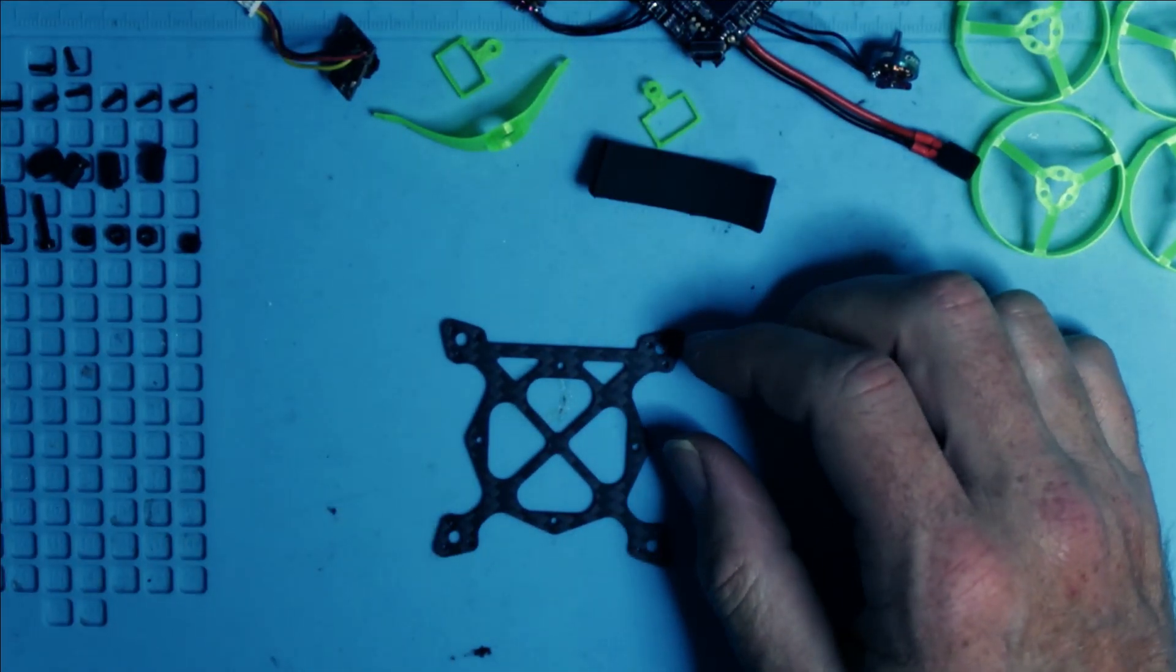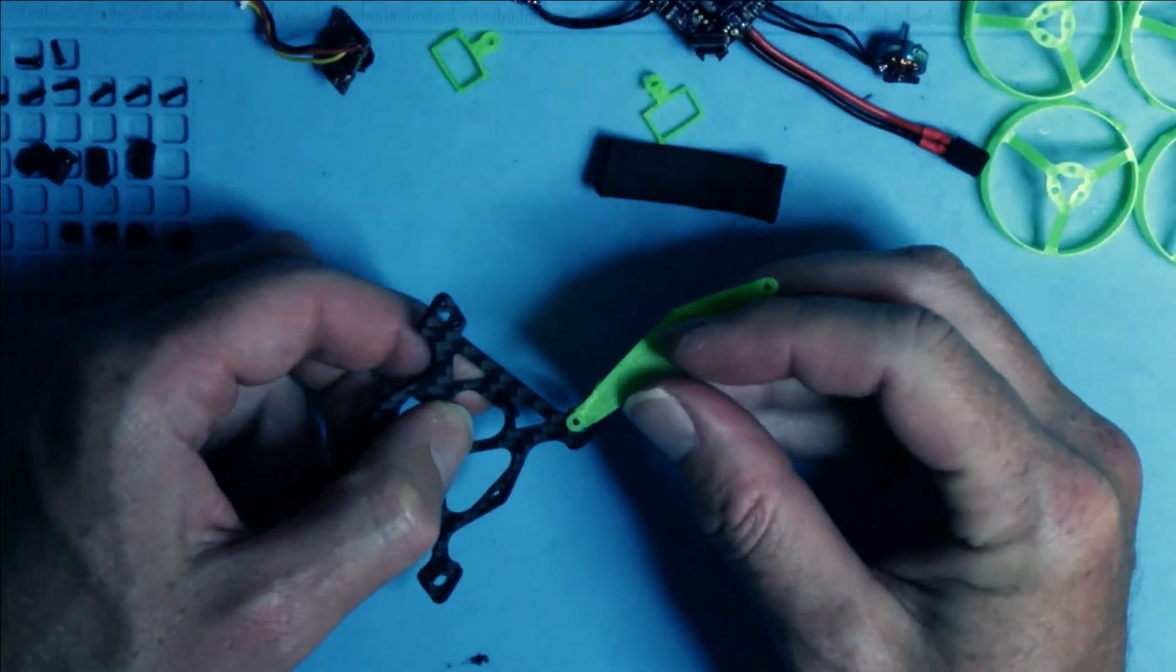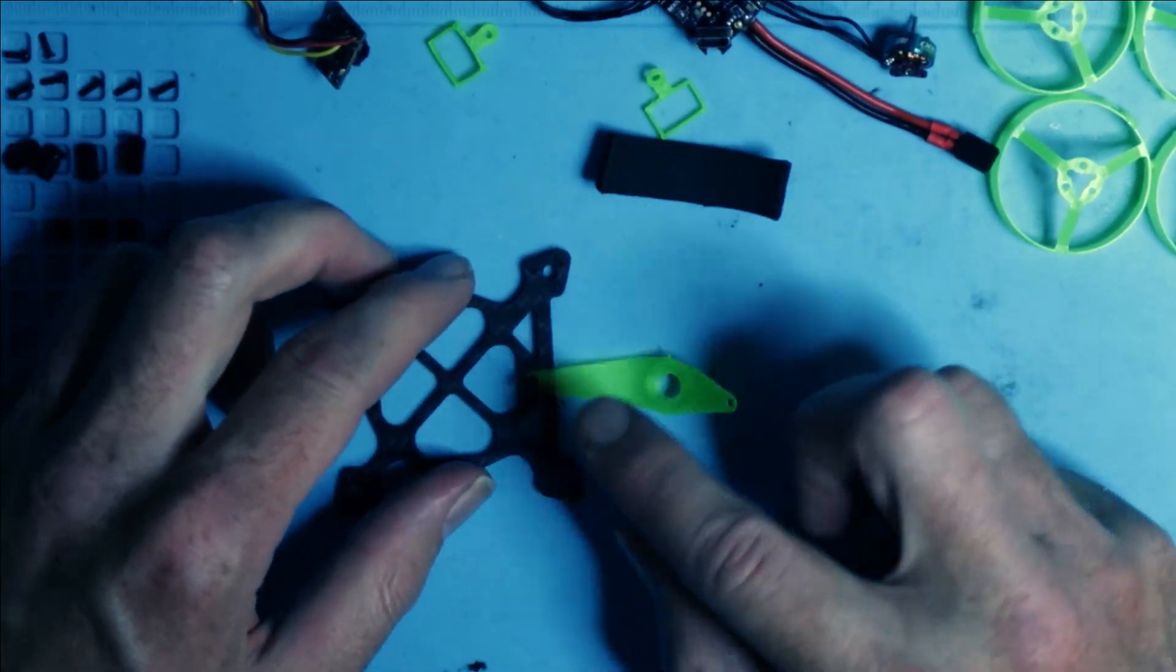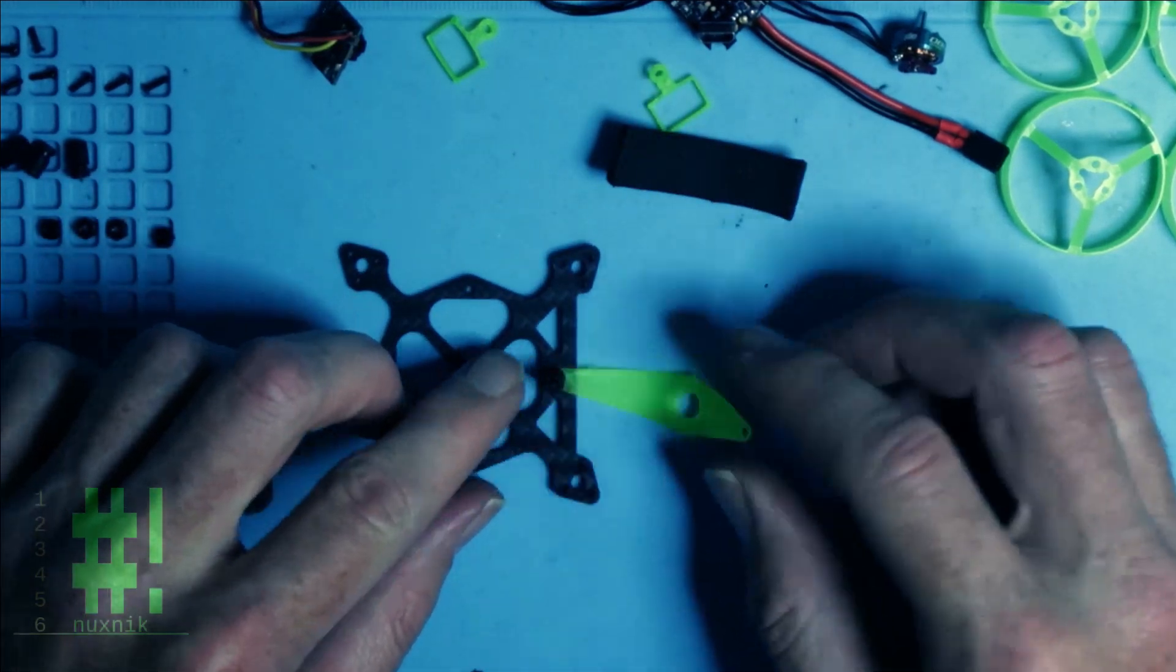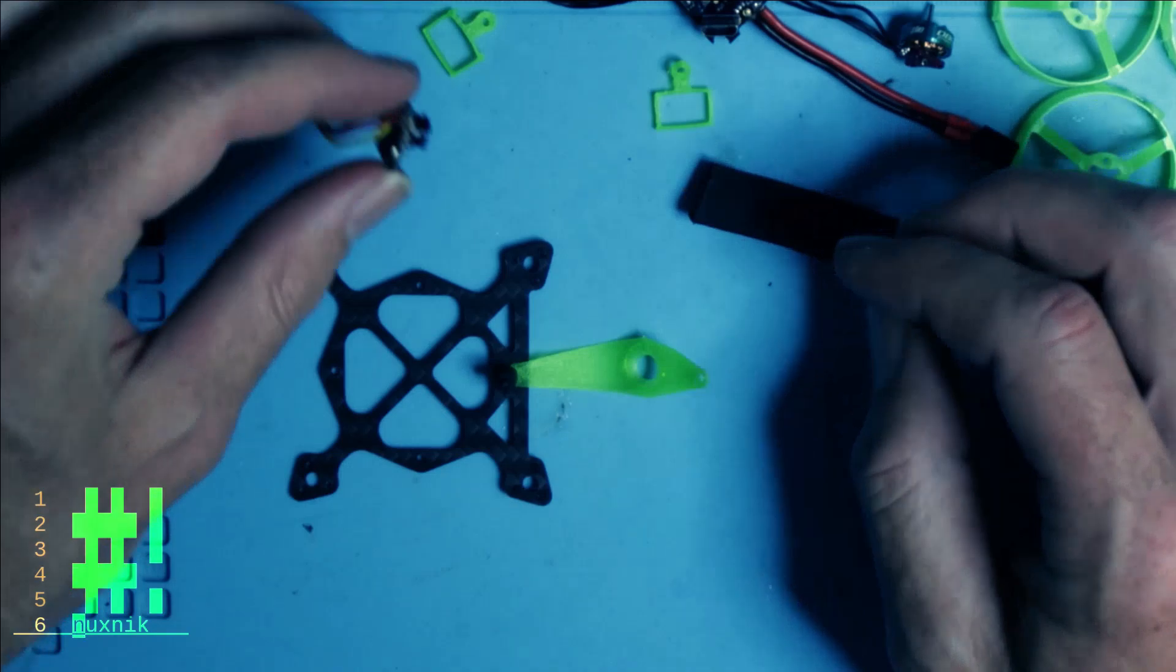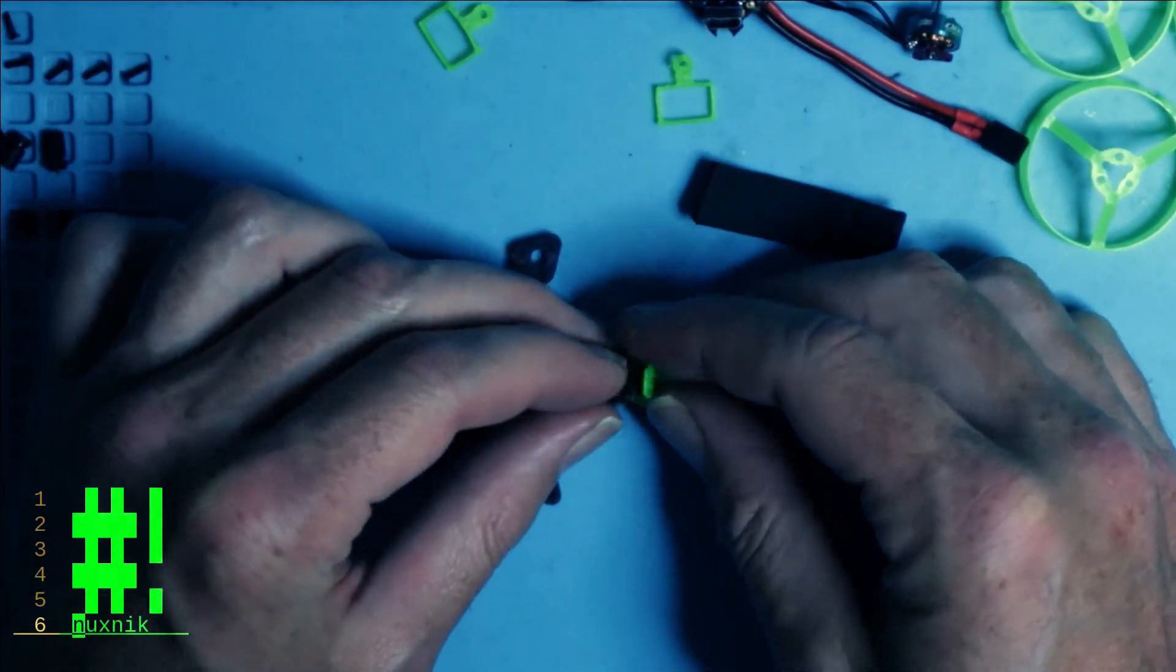To begin, we will attach the camera mount. Insert your M2 nylon screw into the hole on the front of the frame. Turn it around and place the TPU camera holder strip over the screw. Next, we will place a shock absorber gummy over the screw. We can now mount the camera. Place the camera lens into the provided hole for the TPU camera holder.